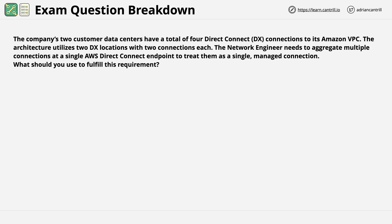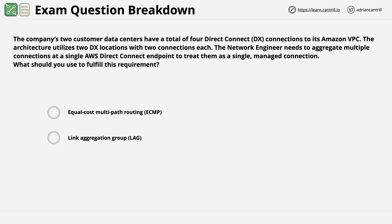Rather than looking for keywords in the question first, I want to show you the available answers. The first answer is to use equal cost multi-path routing, known as ECMP. The second answer is to use link aggregation groups or LAGs. The third answer is to utilize autonomous system or AS path prepending. And the fourth and final answer is to utilize the Direct Connect gateway.